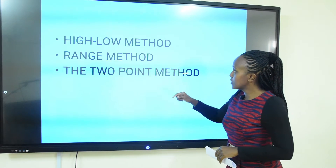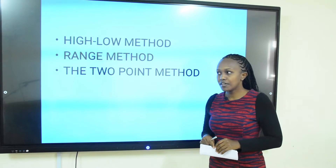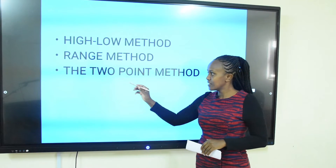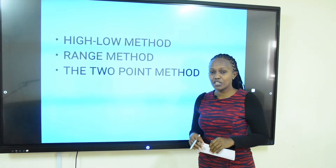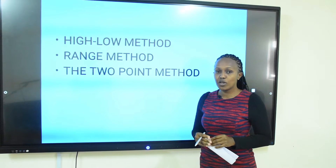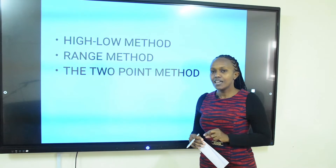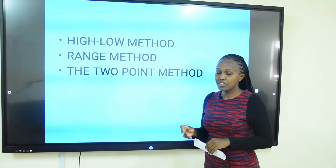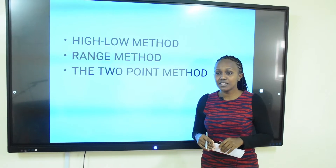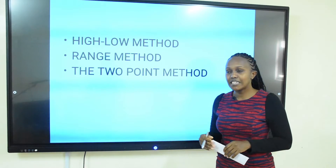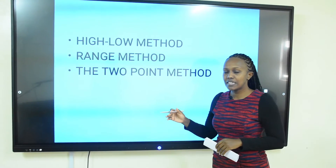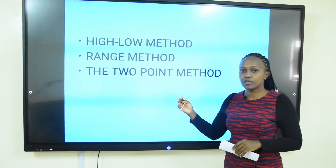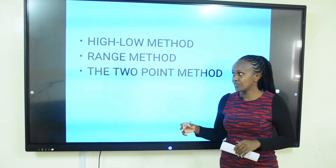The high-low method is also called the two-point method because it relies on two points — the highest and the lowest activity levels. It is also called the range method because it looks at the range, that is the difference in activity level and the difference in associated cost between the highest and the lowest activity levels.